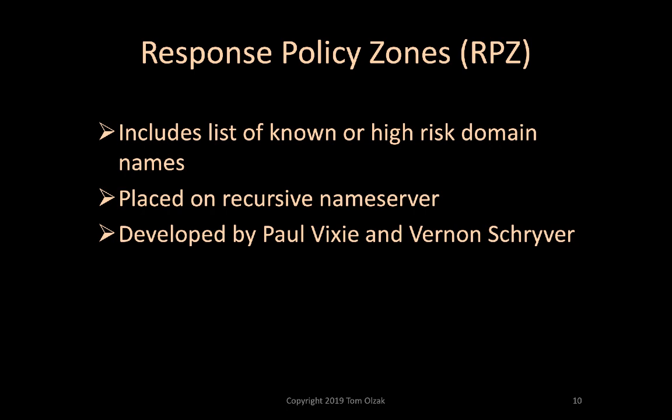The most basic DNS firewall uses a response policy zone, or RPZ, placed on an organization's recursive name server. Developed by Paul Vixie and Vernon Scriver, an RPZ returns a response configured by the organization when a query is made for the address of a known malicious site. RPZ do not just prevent tunneling — they can also help prevent users from falling victim to phishing lures that might result in malware infection or collection of sensitive information.